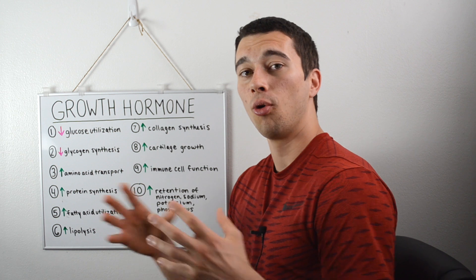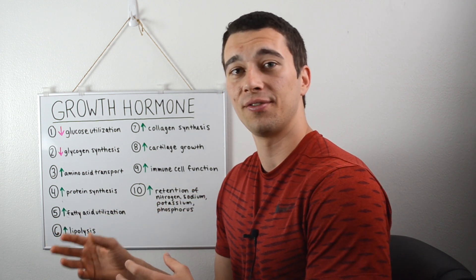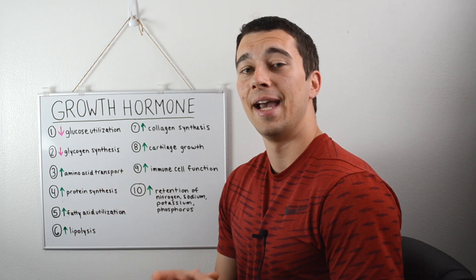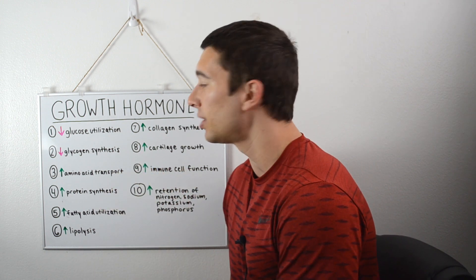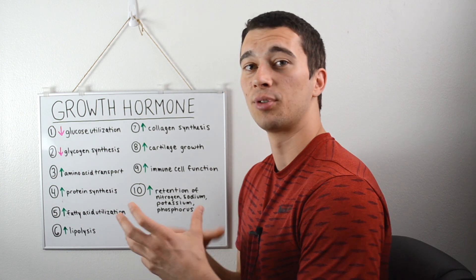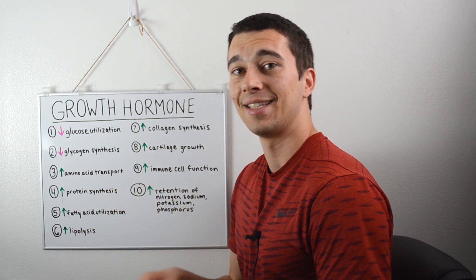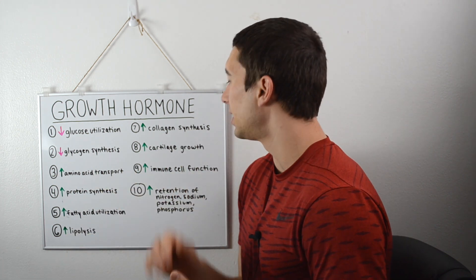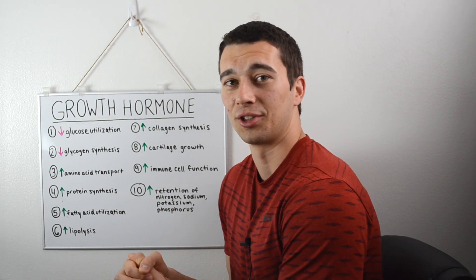To recap overall — a hormone is something that floats around in the bloodstream and communicates between different cells and organs. Growth hormone is one of those hormones and it does all these different functions: it decreases our reliance on glucose, it stimulates IGF-1, it increases amino acid transport and helps promote muscle protein synthesis. It helps break down fats and move them into the bloodstream to be used for energy. It helps promote collagen synthesis, cartilage growth, immune cell function, and the retention of electrolytes.